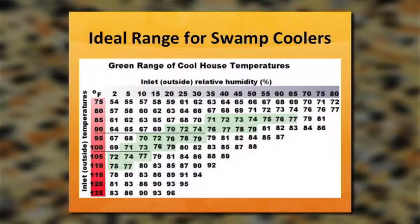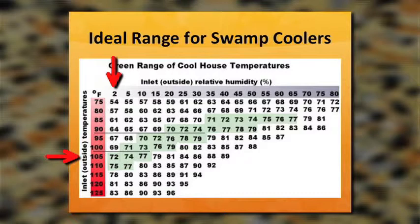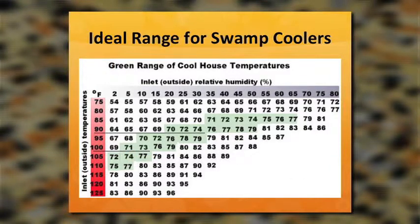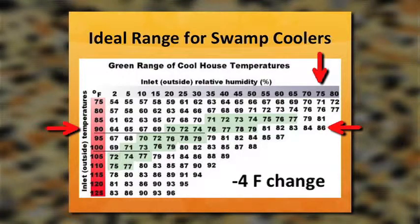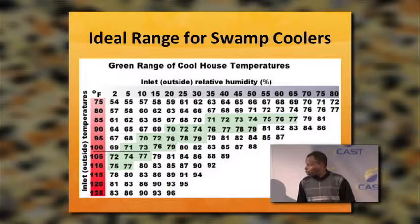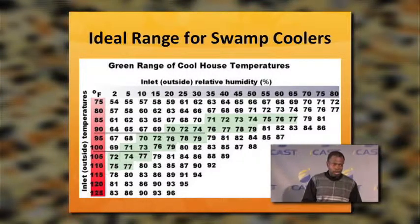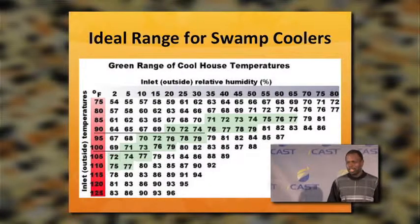The ideal range for swamp coolers: on a chart with outside temperature and relative humidity, in Arizona at 105 degrees with 2% relative humidity, the cooler can bring it down to 72 degrees — a 33-degree difference, which is good and comfortable cooling. In Louisiana at 90 degrees and 75% relative humidity, you'd only get down to 86 degrees — just a 4-degree difference, and swamp coolers will not work there. Swamp coolers work best in a semi-arid, dry climate. Do not use them in a humid climate.